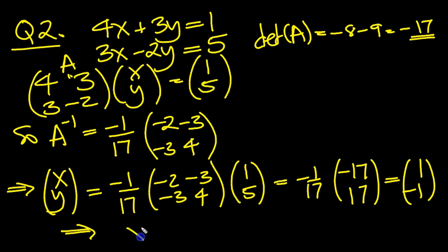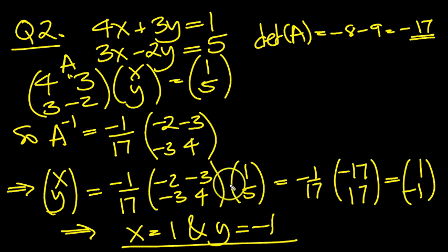So that implies then x equals 1 and y equals minus 1. There we go. Good. Let's just check it then. It was 1 and minus 1 here. So you'd have 4 minus 3 is 1, and 3 plus 2 is 5. So yeah, that looks fine. Good. That's 2 done.